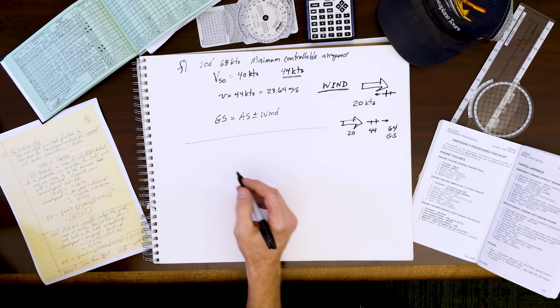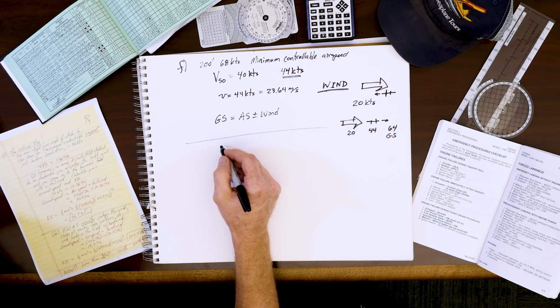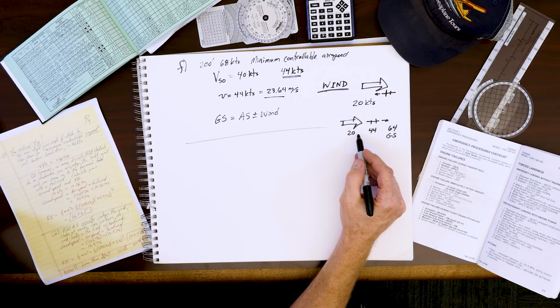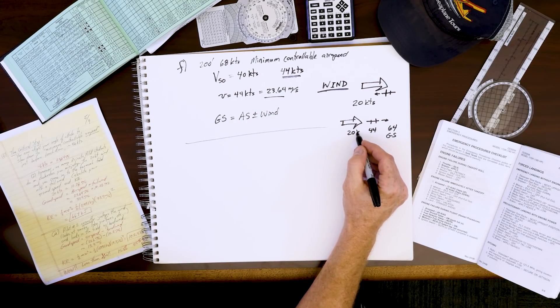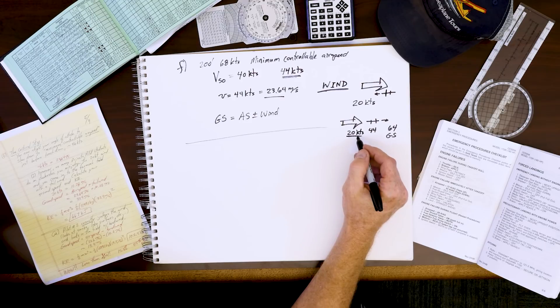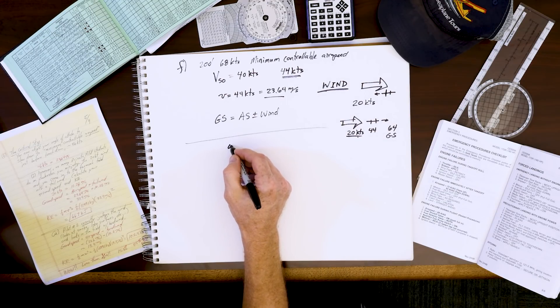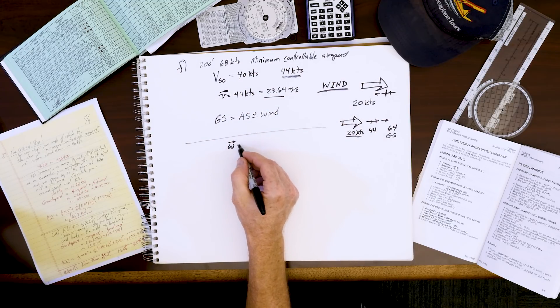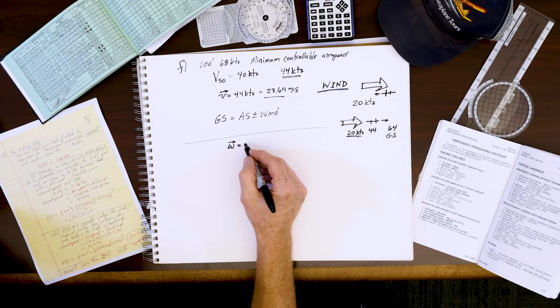Your 44 knots of airspeed is in meters per second. Your next homework is to pause the video and calculate this 20 knots of wind in meters per second. I'll show you my answer here. Our wind (with a vector arrow on top) is going to turn out to be 10.28 meters per second.